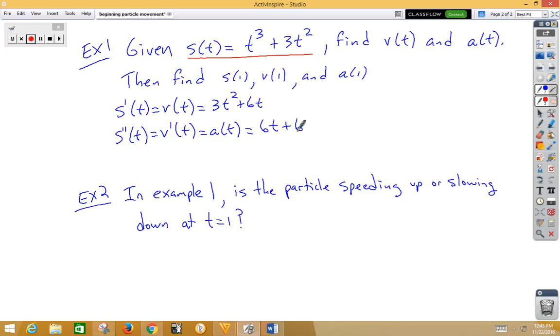Now we want s(1), v(1), and a(1). Well, s(1) means we're going to plug into the original, which would be 1³ + 3 times 1² or 4. We now know that at time 1, Pete is at position 4 on his line. Think a number line.